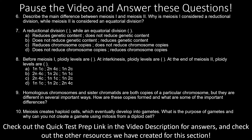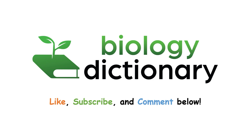Now that we've covered the specific stages of meiosis I and II, let's see if you can answer some AP-style questions. Pause the video now and take this short quiz. You can find answers to all of the questions in this video through the quick test prep link in this video's description. Be sure to check out the links to all the other study resources we have created for this section to help you study. Thanks for watching. Please like this video if you found it helpful and informative. Be sure to leave us comments if you still have any questions about the process of meiosis. Subscribe to the Biology Dictionary YouTube channel to get access to all of our AP Biology videos and study guides. Good luck!